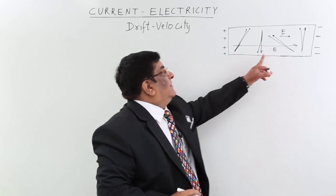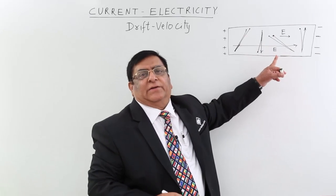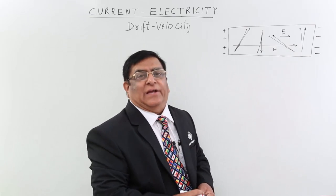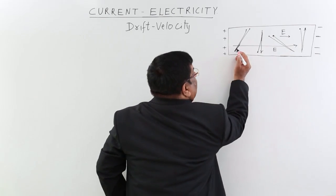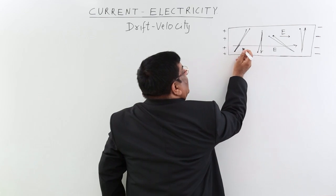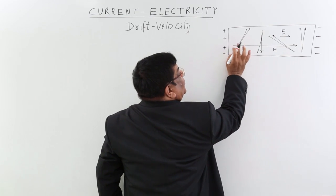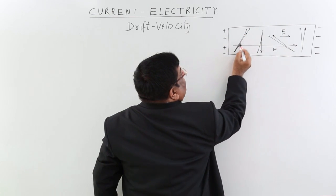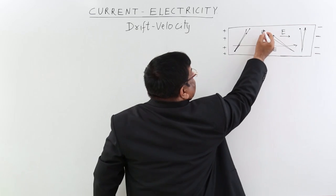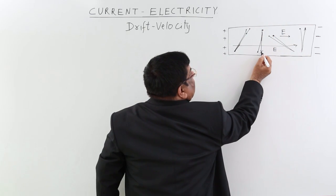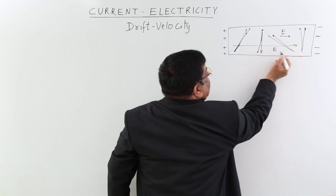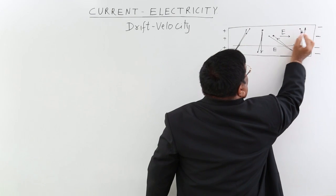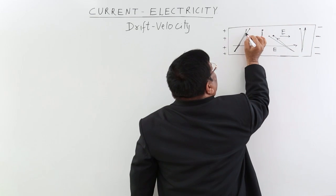Electric field applies a force. Because of the electric field, there is a force experienced by the charge particle. Here the charge particles are electrons. One electron is here; according to thermal velocity, it is going at any time in this direction. This is the vector representing thermal velocity. One electron which was here is coming here because of thermal velocity. All these arrows represent thermal velocity.